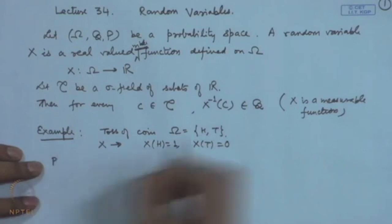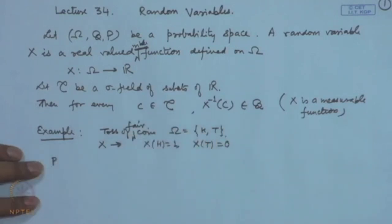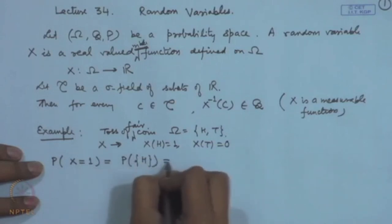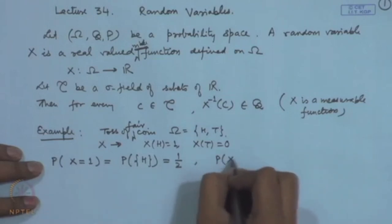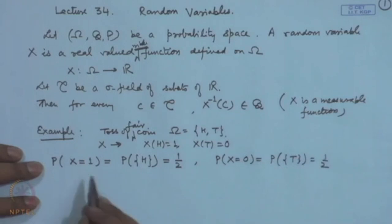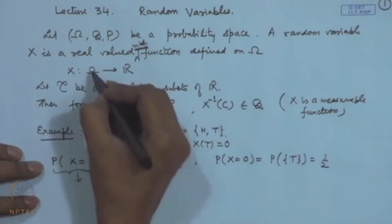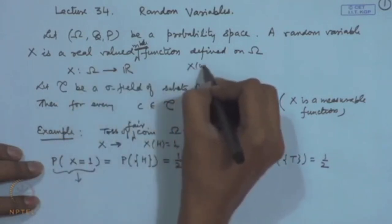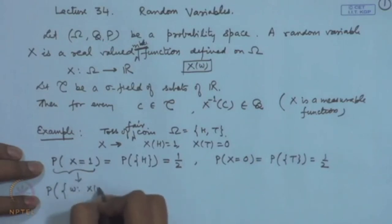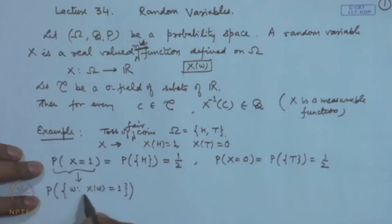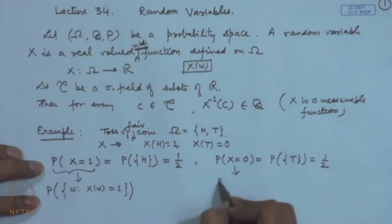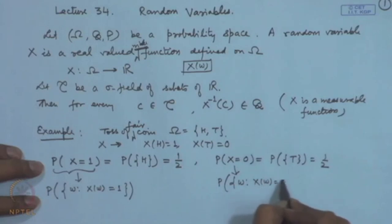Correspondingly, we can define probabilities. Suppose the coin is fair. The probability that X = 1 is the probability of occurrence of a head, which is 1/2. Similarly, the probability that X = 0 is the probability that a tail has occurred, which is also 1/2. More generally, the probability X = 1 is the probability of the set of all ω for which X(ω) = 1; for convenience we simply write P(X = 1).